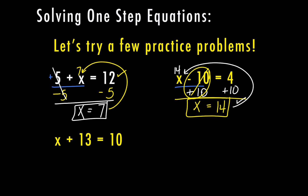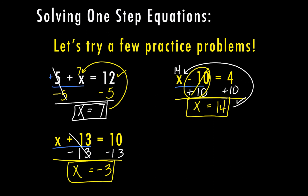For our third example, we have x plus 13 equals 10. On the same side as the variable, I have plus 13. So I'm going to do the opposite — minus 13 on both sides. 13 minus 13 cancels, so on the left side all I have left is x. On the right side, 10 minus 13 — using our integer rules, I'm subtracting a bigger number, so I end up with negative 3. Checking: negative 3 plus 13 gives different signs so I subtract, and since 13 is bigger than 3, the answer is positive 10, which matches.